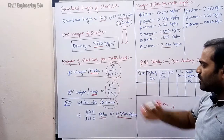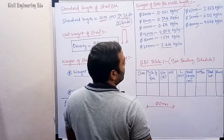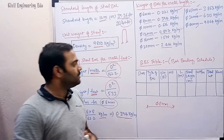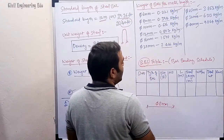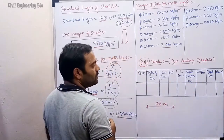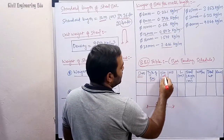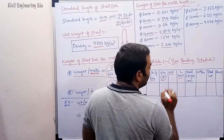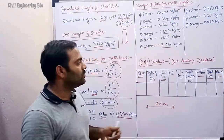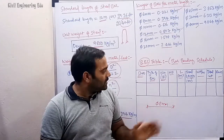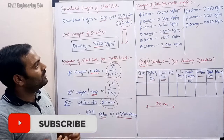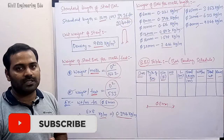To find the quantity of steel required for a project, we use the BBS table — BBS stands for Bar Bending Schedule. The columns in this table are: serial number, type of bar, diameter of bar, number of bars, length of one bar, total length of bar, weight of bar per meter length, total weight, and remarks. Further videos will explain how to fill this table. If you like the video, hit the like button, subscribe to the channel, and thanks for watching.